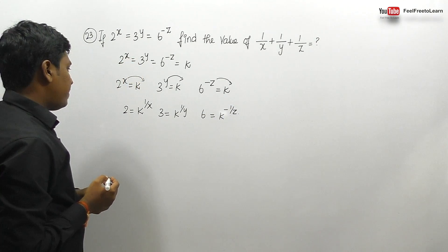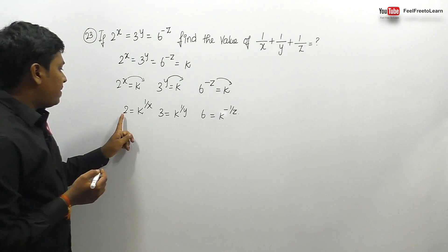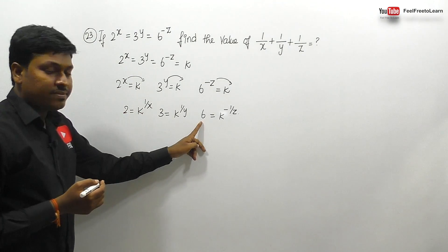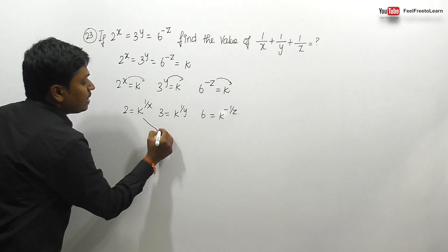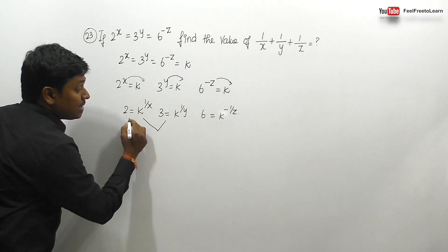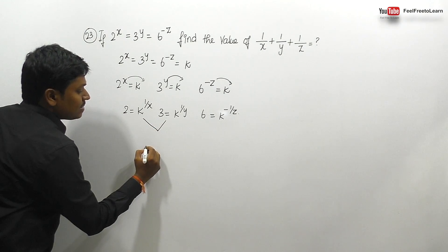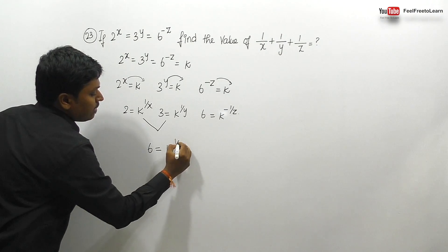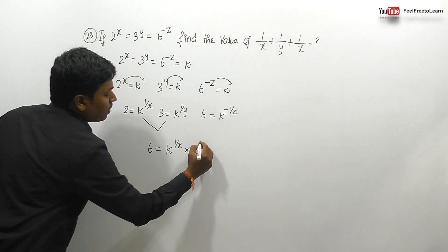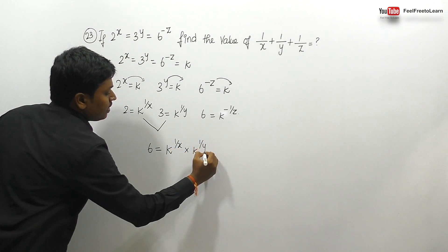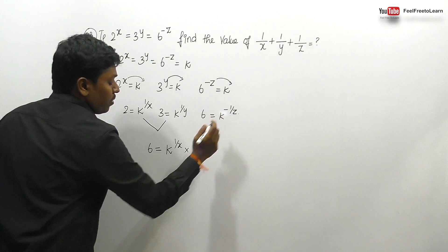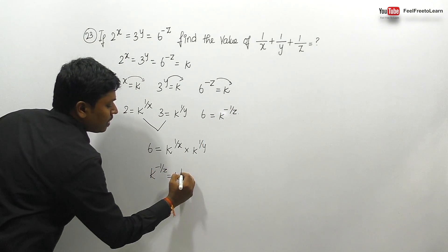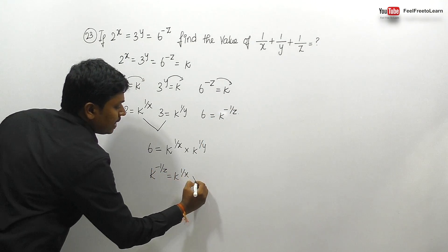Now, 2 × 3 = 6, so multiplying the first and second terms: k^(1/x) · k^(1/y) = 6. But we know 6 = k^(-1/z), so k^(-1/z) = k^(1/x) · k^(1/y).